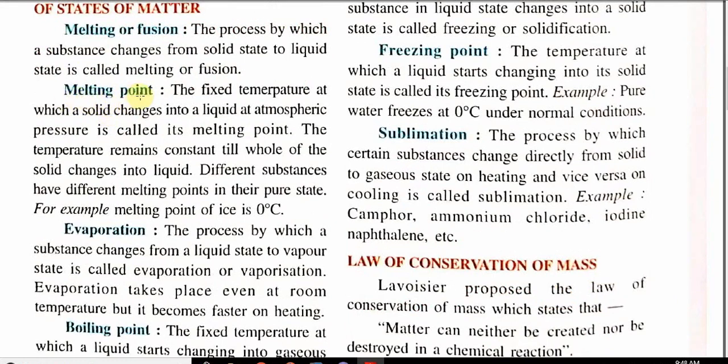Now there are specific points of temperature where these conversions take place. First is melting point. The temperature that is fixed when solid changes to liquid is called its melting point. Different substances have different melting points in their pure state. Students please pay attention, if a substance is not pure, melting point will differ. In later session we will check how it changes. For example melting point of ice is 0 degree C.